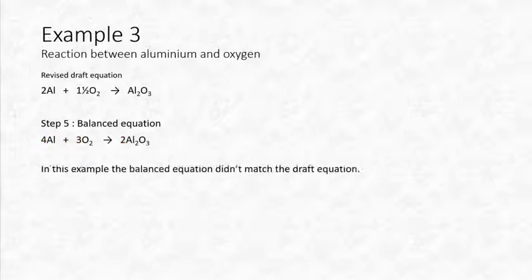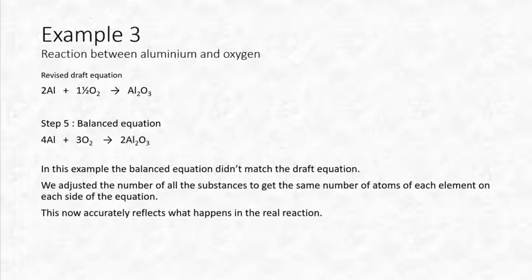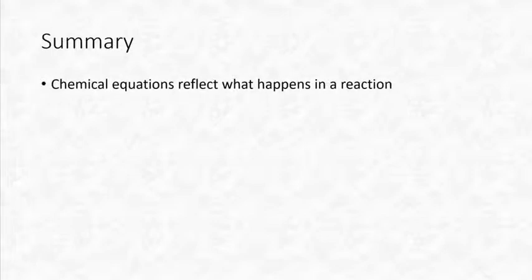That's our final balanced equation: 4Al + 3O₂ → 2Al₂O₃. Our original draft was not balanced, but now we have the same number of atoms of each element on each side, and this accurately reflects what's happening in the reaction.